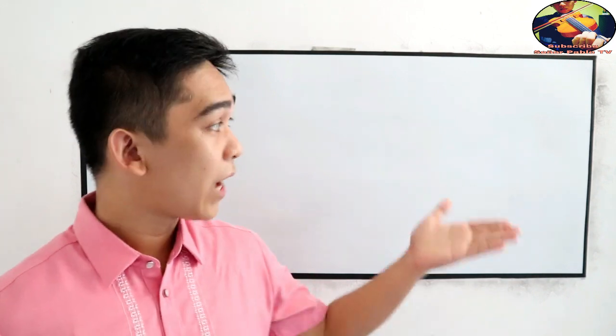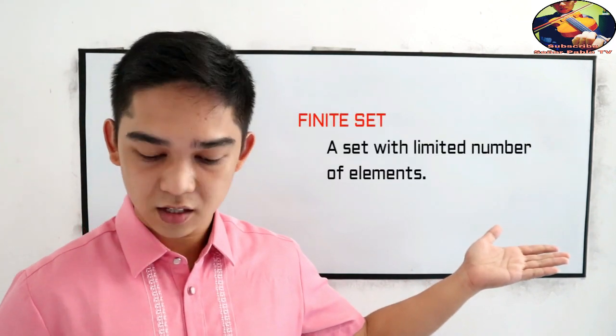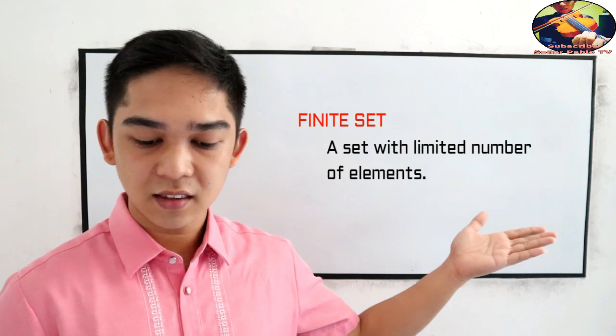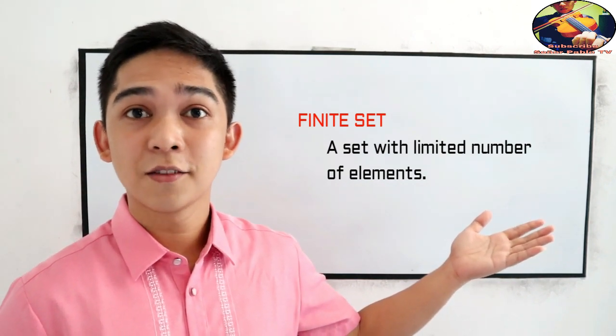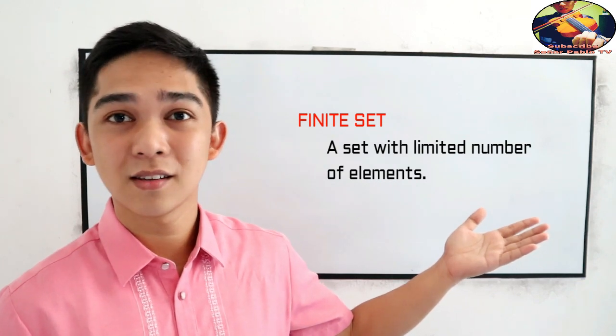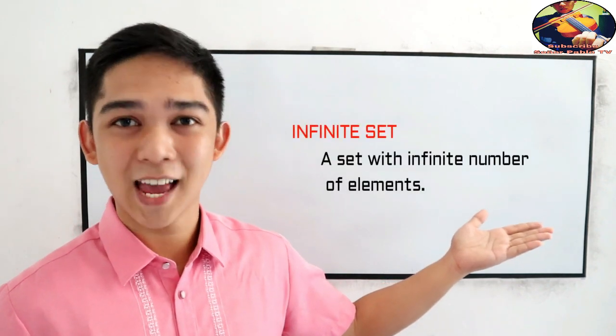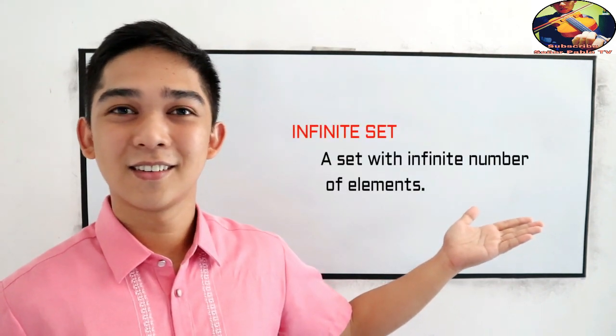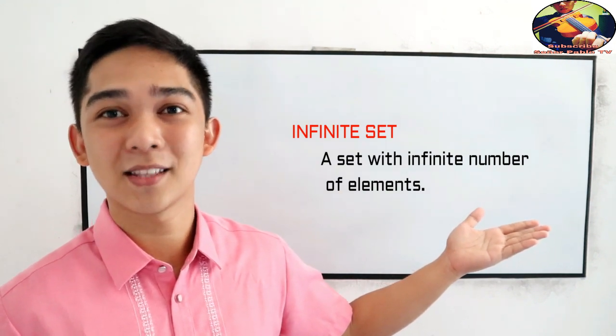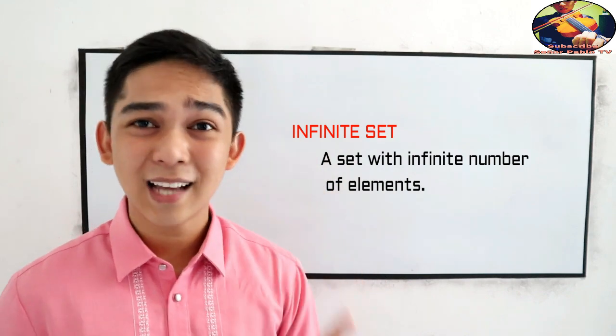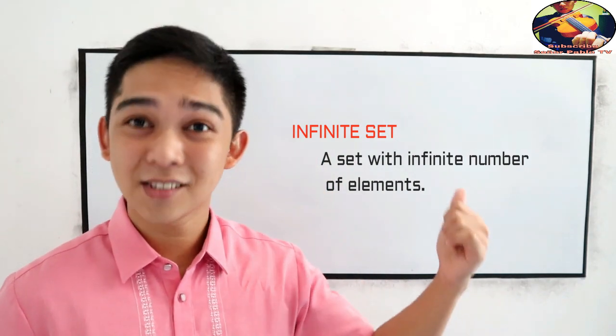And we will also encounter the following terms. We have the finite set, a finite set is a set with limited number of elements. That means we can count the number of elements that can be countable. The second one is the infinite set, a set with infinite numbers of elements. That means we cannot count the elements in that set.